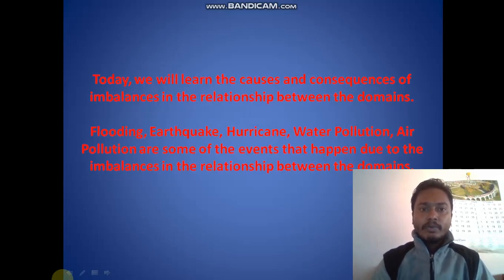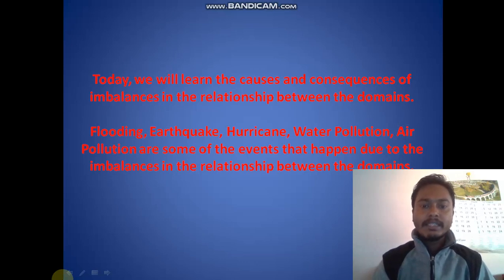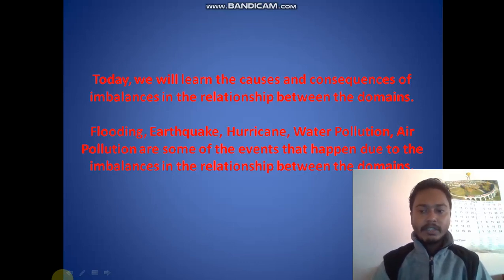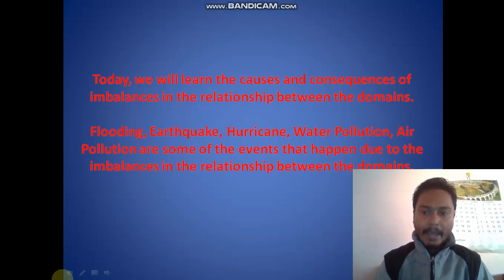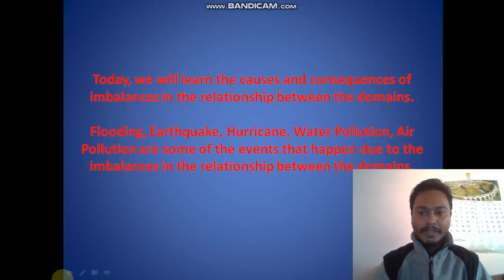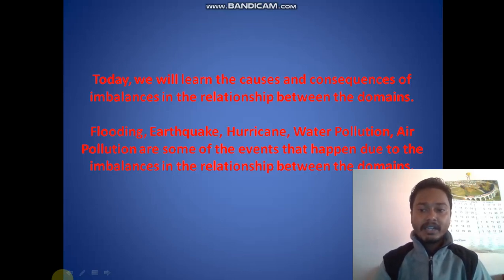Today we will learn the causes and the consequences of imbalances in the relationship between the domains. Because when there are causes there will be consequences whenever we imbalance the relationship between the domains. Some examples like flooding, earthquake, hurricane, water pollution, and air pollution are events that happen when there are imbalances in the relationship between these domains.